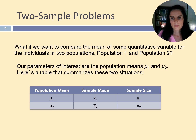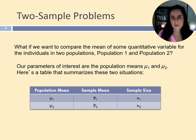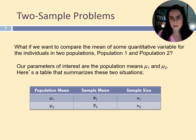This could be the case when we want to see if a certain variable, like test scores on a certain subject area, are significantly different between males and females. In such a situation, we must randomly select a group of females and then randomly select a group of males. We have two groups and they come from two separate populations — the population of females and the population of males. Each one of these two populations has a mean on that variable. The notation for the two population means is mu1 and mu2.